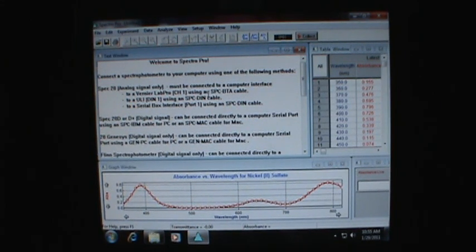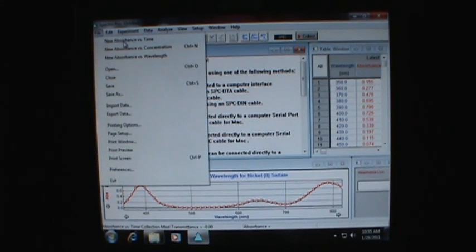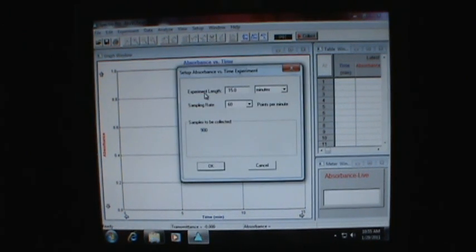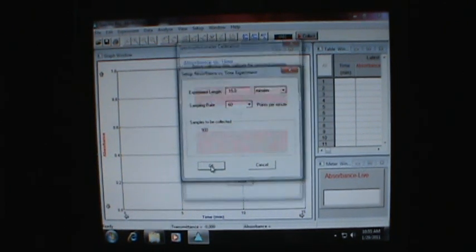This is the open page for SpectroPro. We want to set up a new absorbance versus time experiment. Read your dialog boxes. To collect data, verify the experimental setting, follow the on-screen instructions, insert sample, click collect. We'll set it up for 15 minutes. That's longer than we'll need, but 15 minutes is okay. 60 points per minute will be one per second, so that looks good.